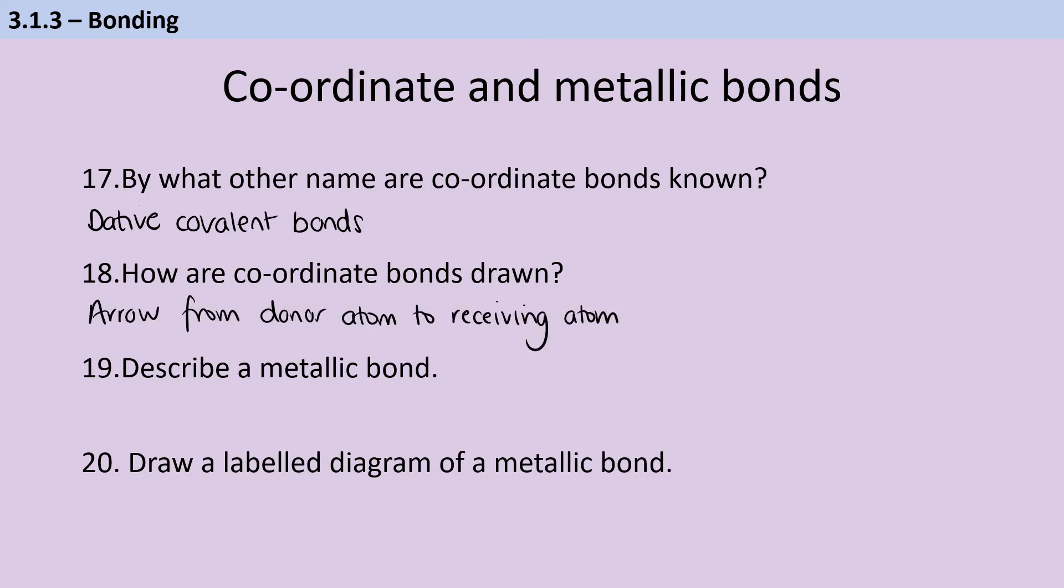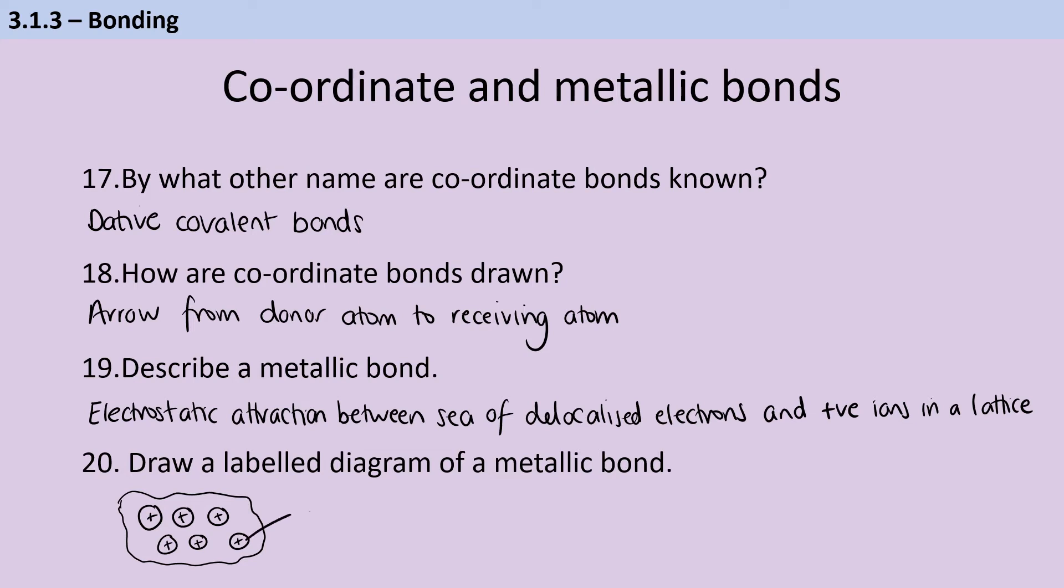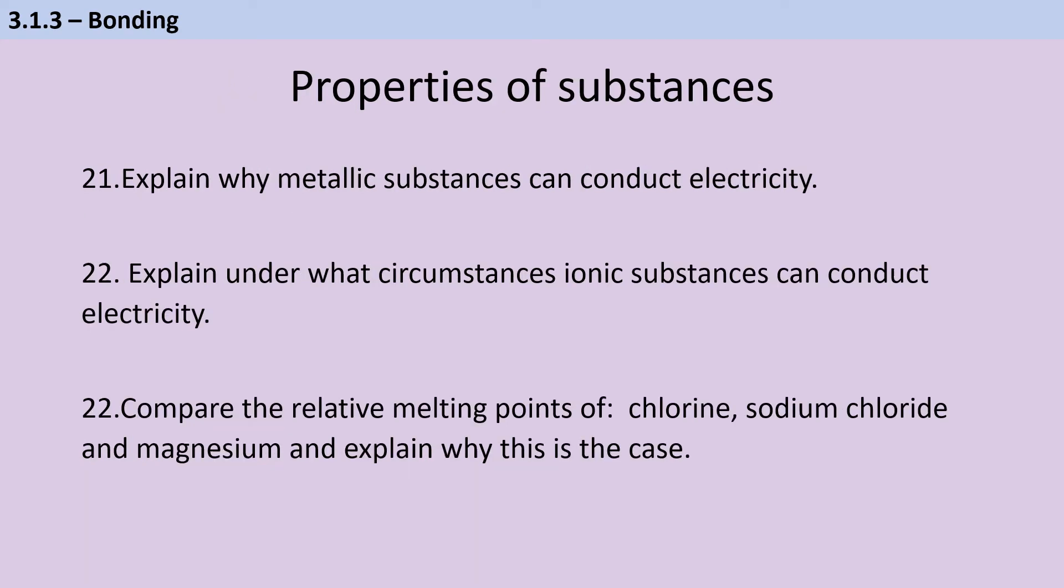A metallic bond is the electrostatic force of attraction between the sea of delocalized electrons and the positive ions in a metallic lattice. And it looks a little bit like this. So we've obviously got our positive ions. And then around them is that sea of delocalized electrons. Metallic substances, just like graphite, can conduct electricity because they have this sea of delocalized electrons, and these are able to move through the substance and carry charge.